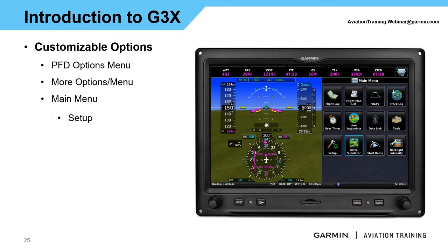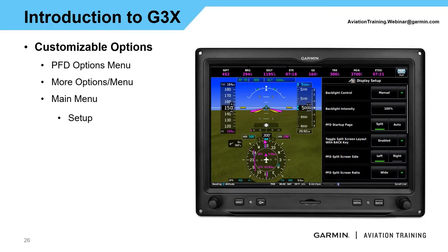The other option is going into the main menu — hit the menu button twice, go over to setup, then PFD setup — which takes us to the same display setup. This display setup has a couple of additional options such as backlight intensity. We can also choose which side we want the PFD to split screen to — the right side or the left side — as well as whether we want a wide format or narrower format. Once again, there are even more additional options to customize.